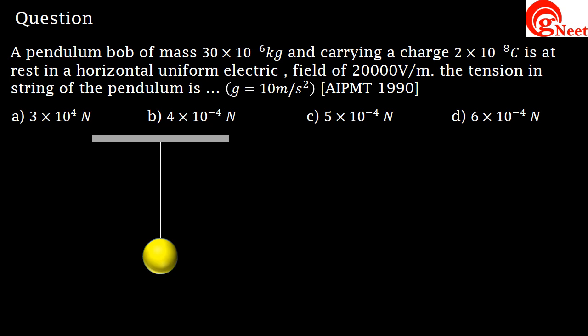Let's draw the diagram. In the diagram, we have not shown the electric field, and only the downward gravitational force is acting on the bob. To balance this downward force, the tension in the string is in the upward direction, and the tension T equals mg.